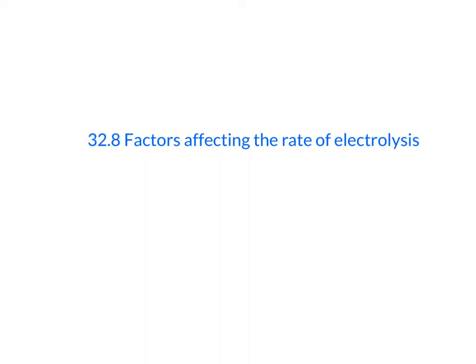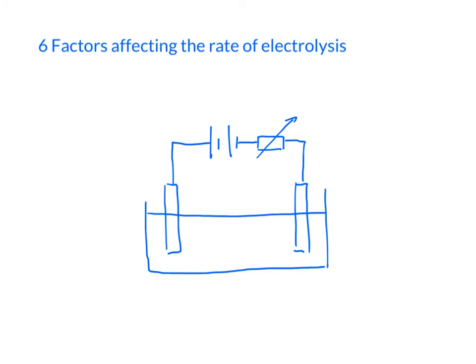In this video we're going to talk about the factors affecting the rate of electrolysis. Before we move on, you can pause the video thinking about some factors that may affect the speed of electrolysis. Okay, so there are actually six factors affecting the rate of electrolysis.